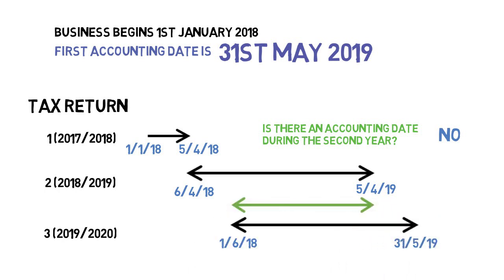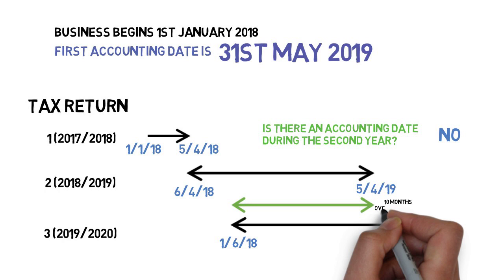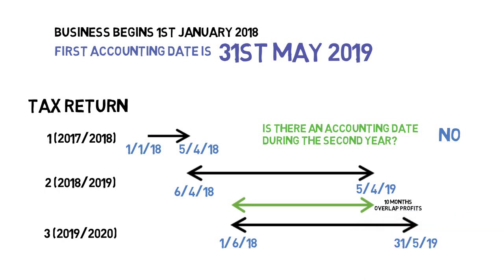The business owner must pay tax twice through overlap profits for a 10-month period. Future basis periods will run from 1st of June to 31st of May and there will be no further overlaps, but the owner will have to budget for this double taxation in year three.